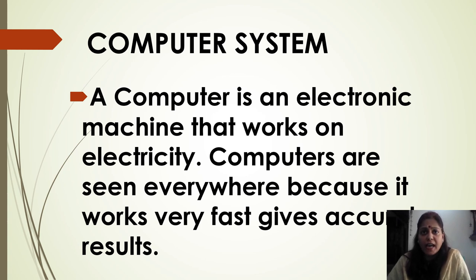Computer is having four different parts and many other parts also, but basically having four parts which are they? Keyboard, mouse, and CPU. All together that is called computer system.